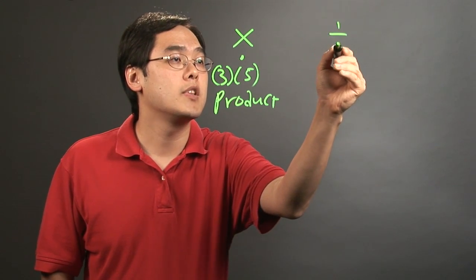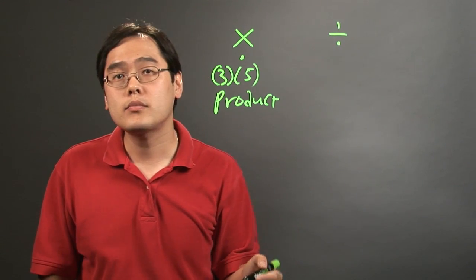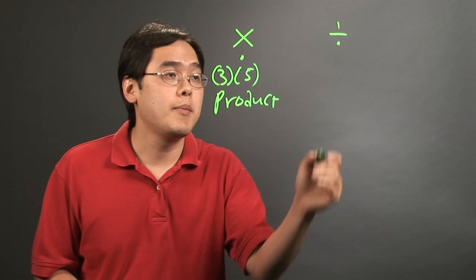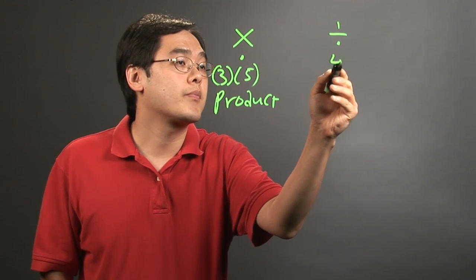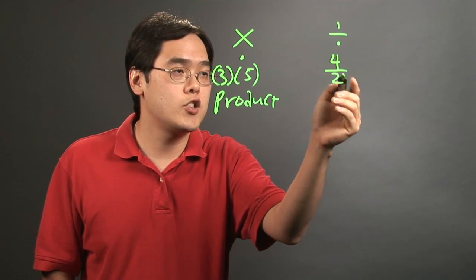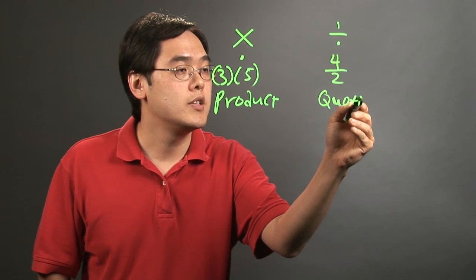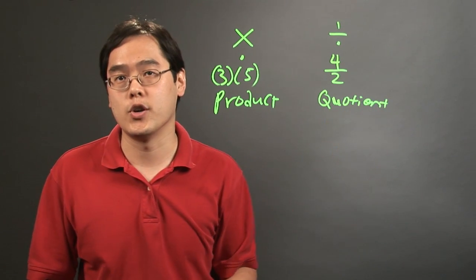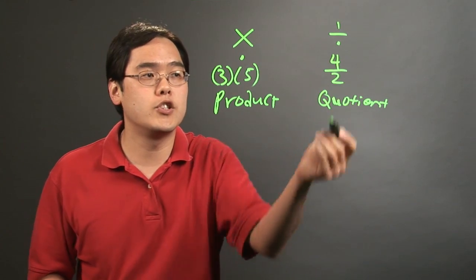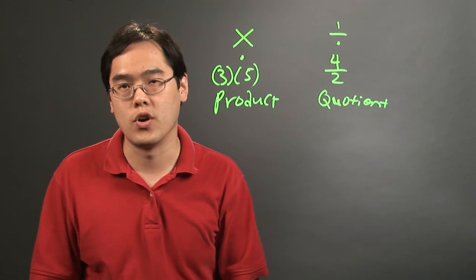Now with division they might use the division symbol. Visually you might see numbers stacked on top of each other with a line in between, but a key word associated with division is that of quotient. So find the quotient of 4 and 2 means divide 4 and 2.